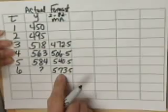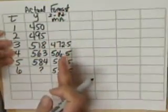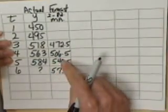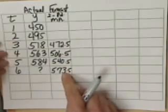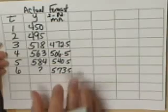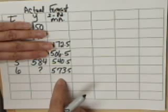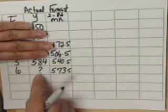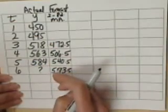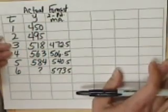Using this two-period moving average — and actually any of these smoothing methods — we can only forecast one period into the future. Wherever our actual values end, we can only go one period ahead. If I were to drop the oldest value out, I'd need two values to make a prediction for period seven, but I only have 584, so we can only go one period into the future once our actual time values end.